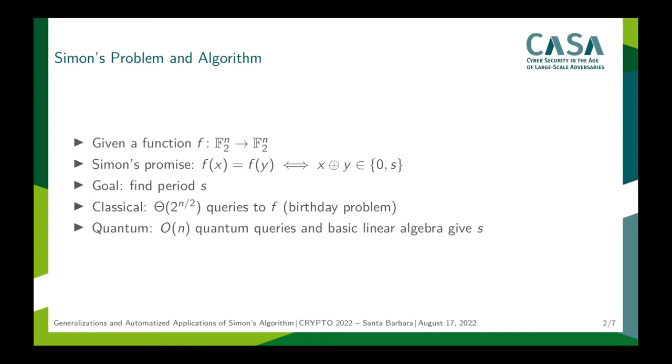In the classical world, this is a hard problem, in that sense that you need at least about 2 to the n over 2 queries to f to find s. But in the quantum world, we can use Simon's Algorithm and Simon's Algorithm only needs O(n) quantum queries to f and then some basic linear algebra to find s.